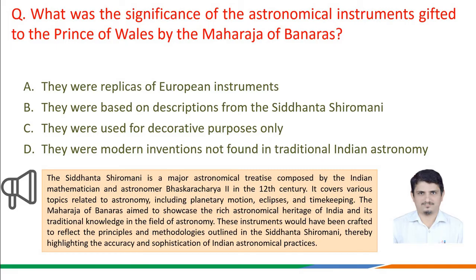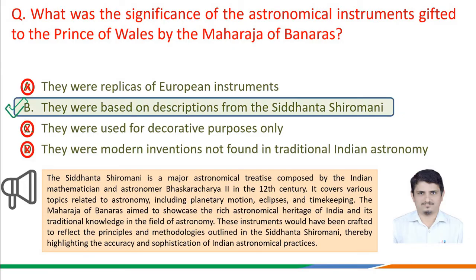The Siddhanta Shiromani is a major astronomical treatise composed by the Indian mathematician and astronomer Bhaskaracharya II in the 12th century, covering planetary motion, eclipses, and time keeping. The Maharaja of Banaras aimed to showcase the rich astronomical heritage of India. These instruments were crafted to reflect the principles and methodologies outlined in the Siddhanta Shiromani, highlighting the accuracy and sophistication of Indian astronomical practices. Therefore, the correct answer is option b: they were based on the descriptions from the Siddhanta Shiromani.